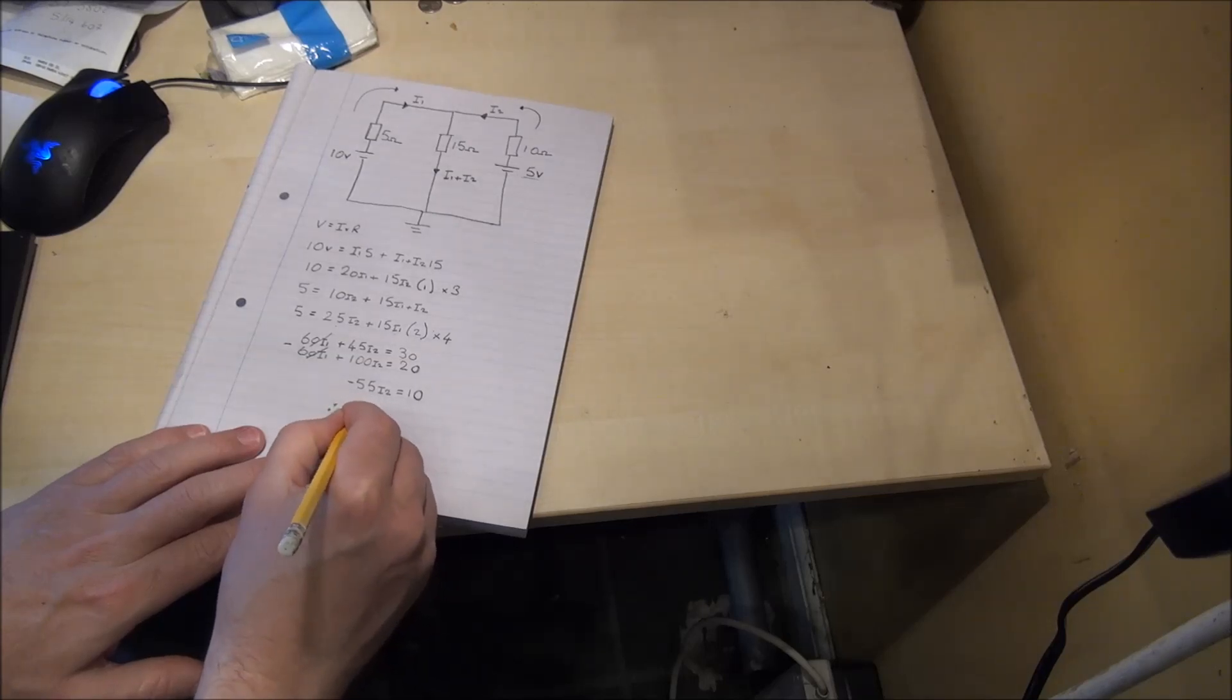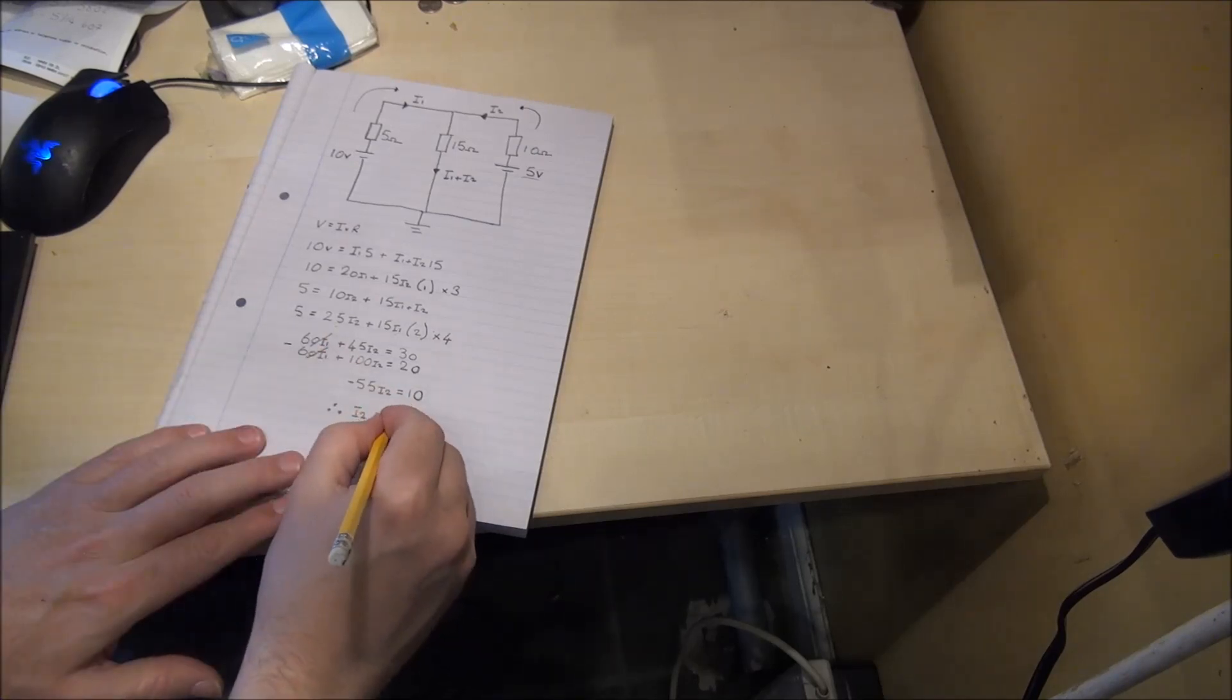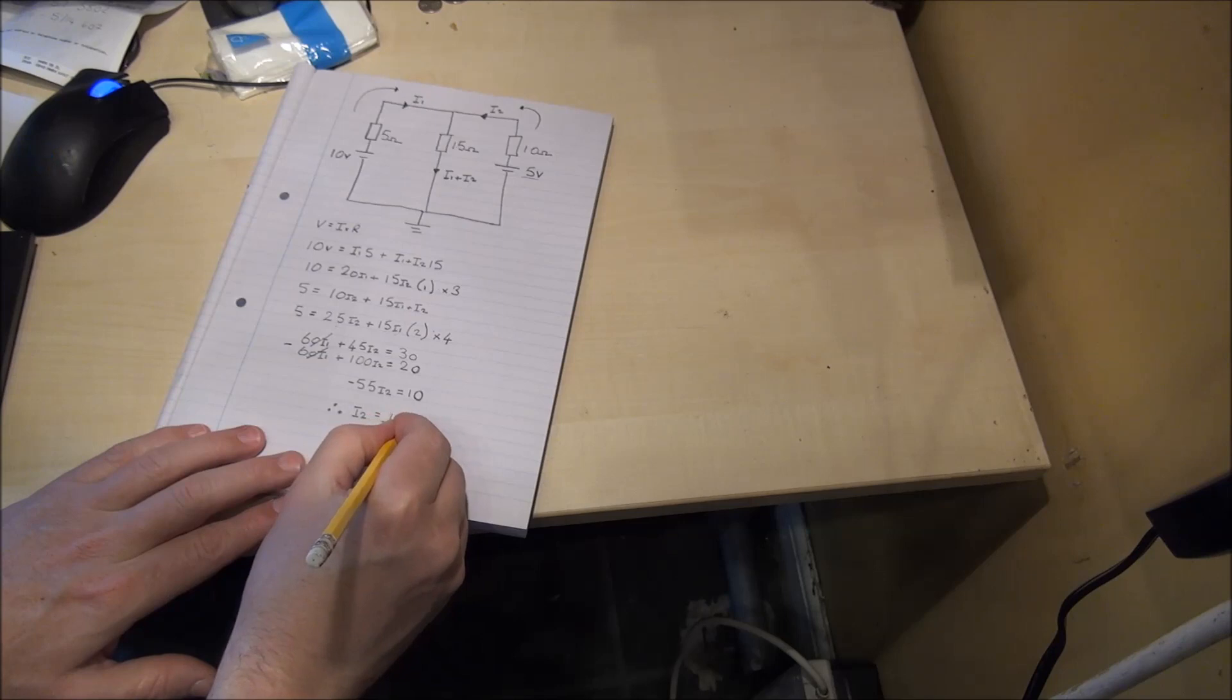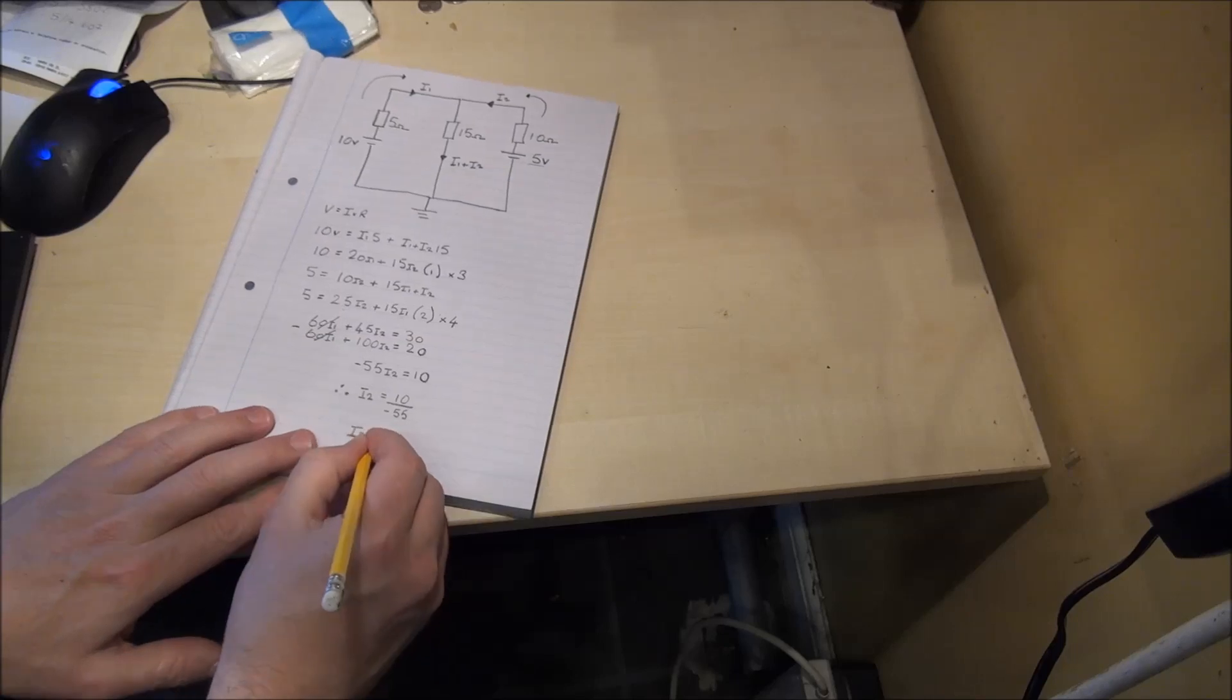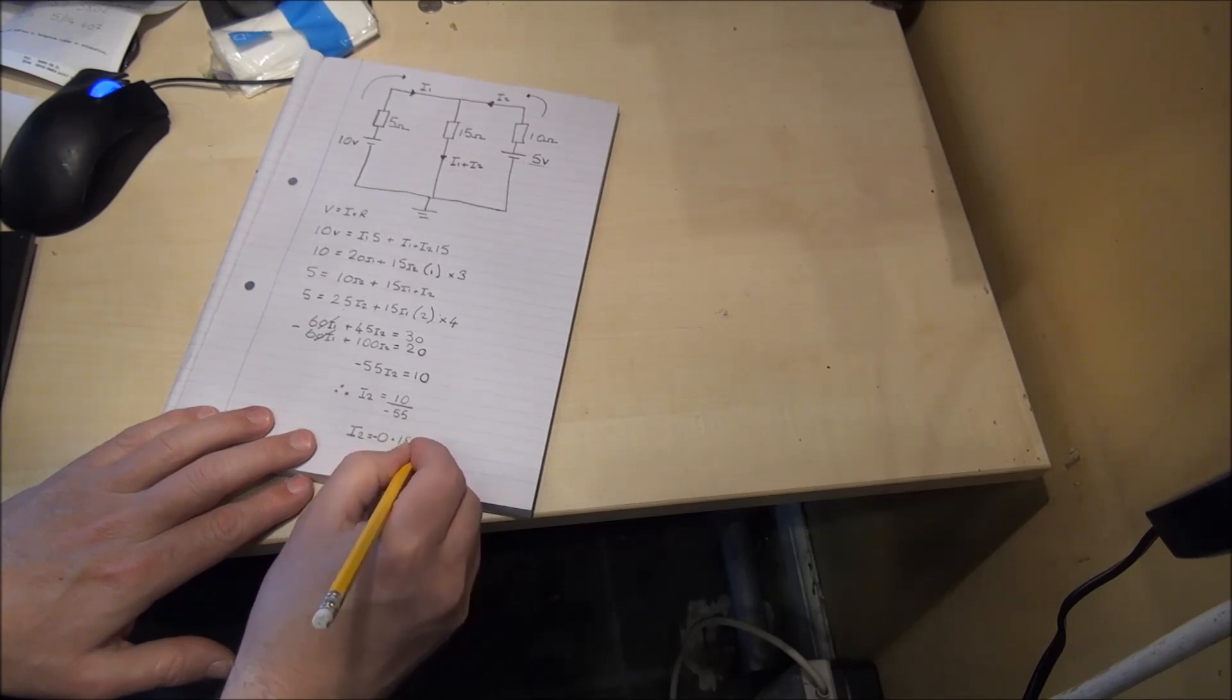I2, when you do this in your calculator, is equal to 10 divided by minus 55. The current I2 is equal to minus 0.1818 Amps.